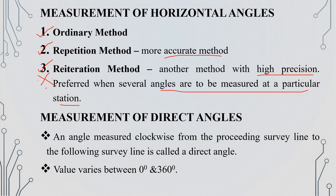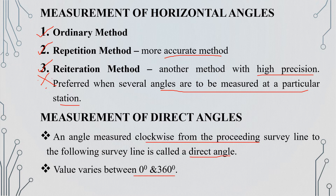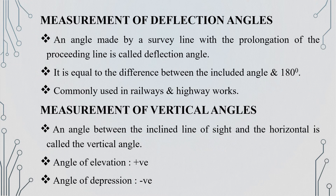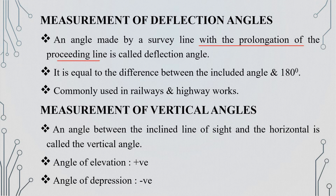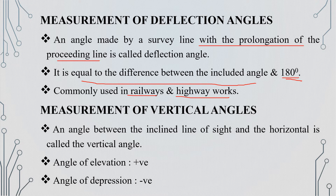We measure direct angles. A direct angle is an angle measured clockwise from the preceding survey line to the following survey line. This angle has a value up to 360 degrees. Next, the measurement of deflection angle: a deflection angle is an angle made by a survey line with the prolongation of the preceding line, with a value up to 180 degrees.